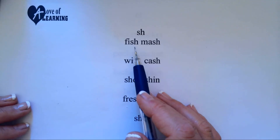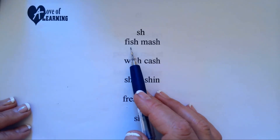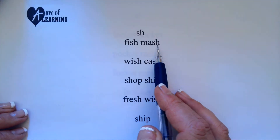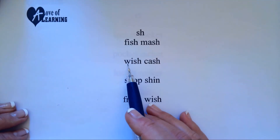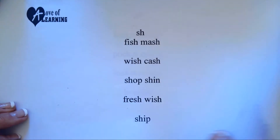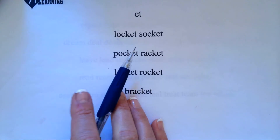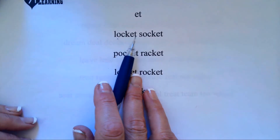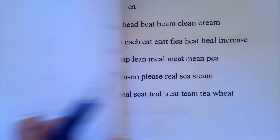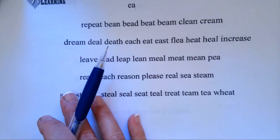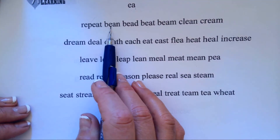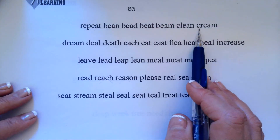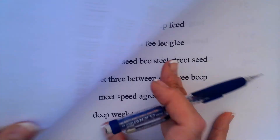S-H makes sh. F-I-S-H, fish. M-A-S-H, mash. W-I-S-H, wish. E-T makes et. L-O-C-K-E-T, locket. E-A makes e. B-E-A-N, bean. C-R-E-A-M, cream.